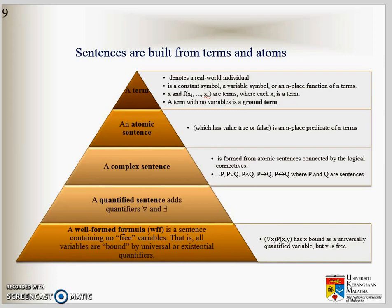The first order logic sentences are built from terms and atoms. Terms describe the real world individual. It is a symbol, can be a variable, functions, et cetera. And then we have atomic sentence which has value true or false.